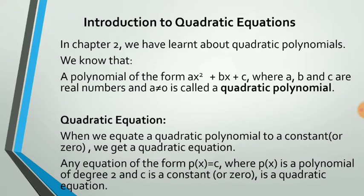Any equation of the form p(x) equal to c, where p(x) is a polynomial of degree 2 — that is, a quadratic polynomial — and c is a constant, is a quadratic equation.